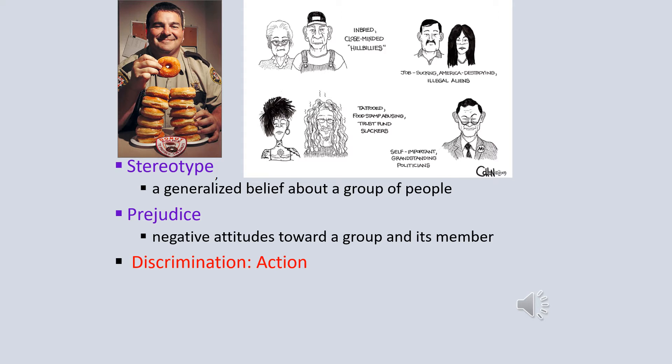So, for example, an employer not hiring someone because of race, ethnicity, or gender. That would be discrimination based on their negative or prejudiced attitude.